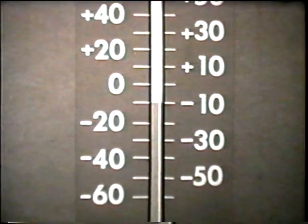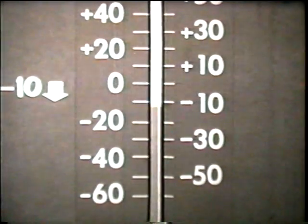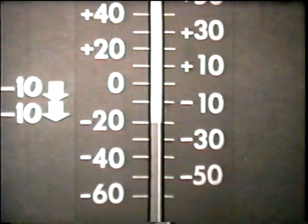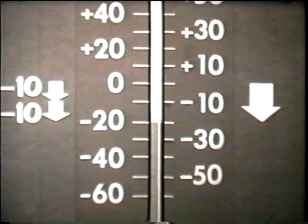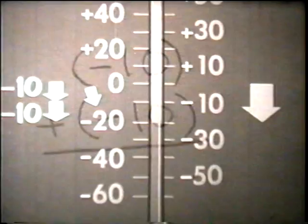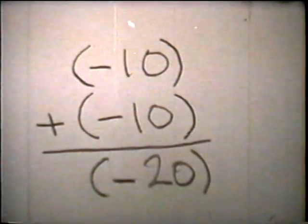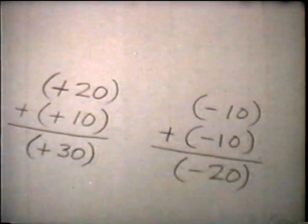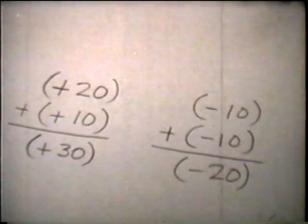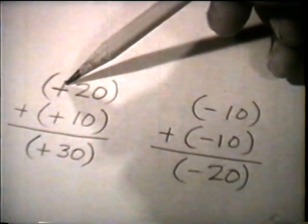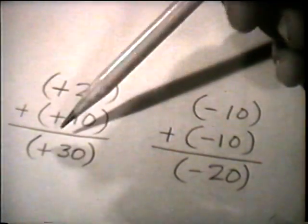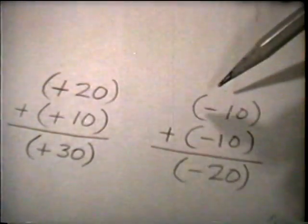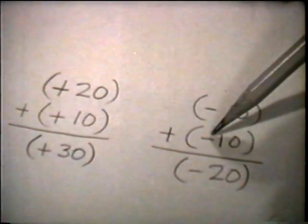In this second example, the column moves in the negative direction — down 10 degrees from zero, and then 10 more degrees in the same direction. You can see that the total movement is 20 degrees, a negative 20. Negative 10 plus negative 10 equals negative 20. Now you can see one rule for adding signed numbers: in these two examples, we added the absolute values of the numbers and kept the same sign in the answer. So the sum of two positive numbers is a positive number, and the sum of two negative numbers is a negative number.